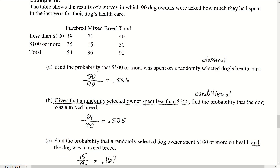The first question asks: find the probability that more than $100 was spent on the dog's health care. There are 50 dogs that had more than $100 spent on them out of the total of 90, giving a probability of 50 divided by 90, which is 0.556.